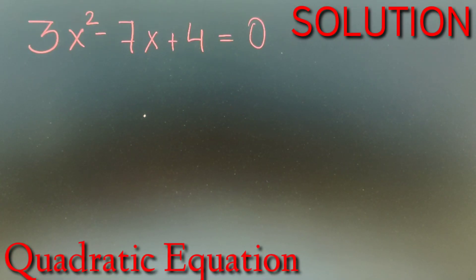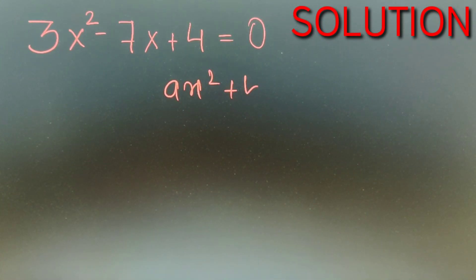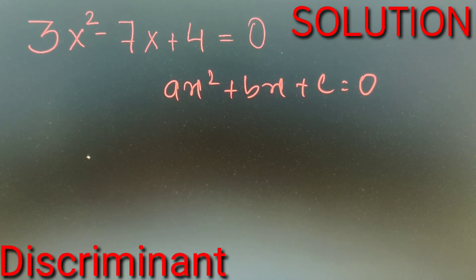Now the equation that we have over here is a simple quadratic equation of the form ax square plus bx plus c is equal to 0. Now according to our question, we don't have to find the values of the solutions. We only have to find how many solutions are possible. So we can simply use the method of discriminant.